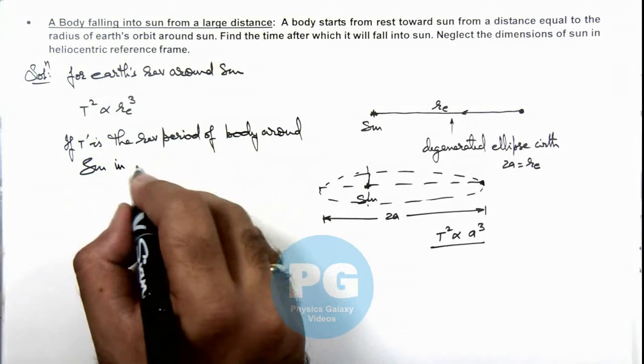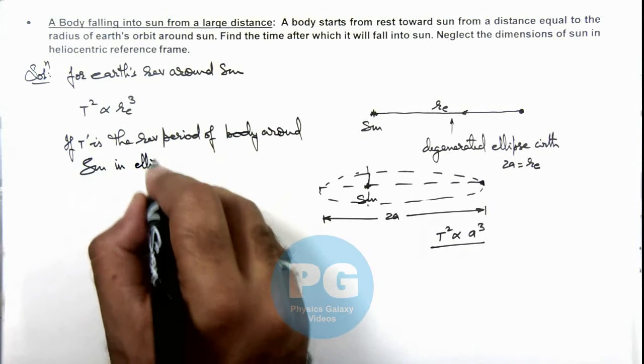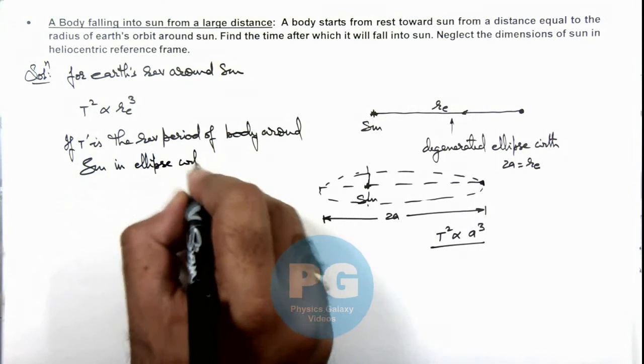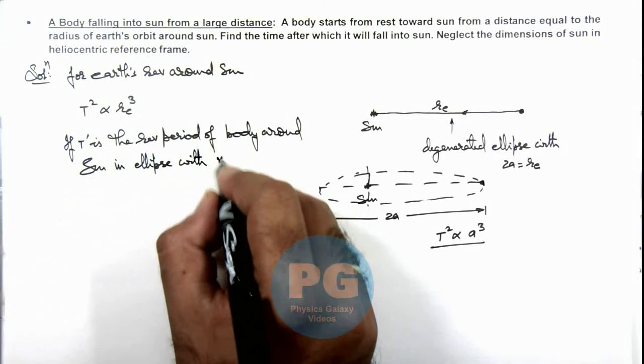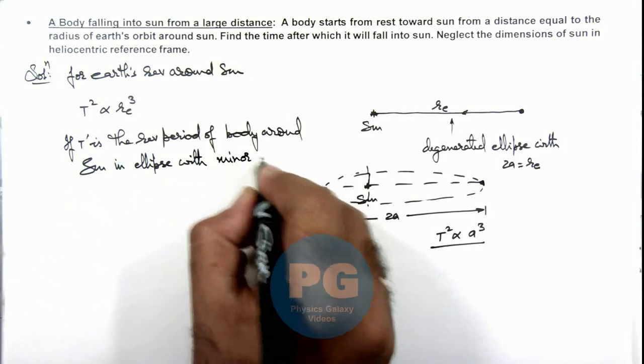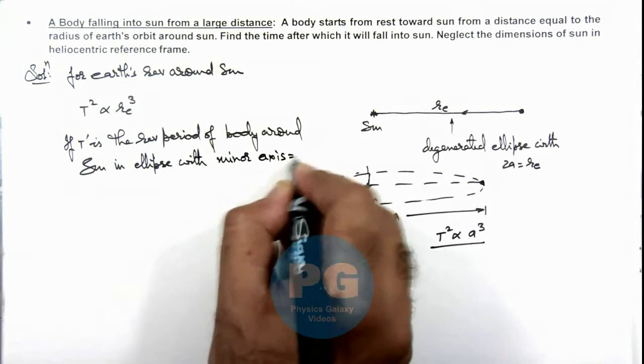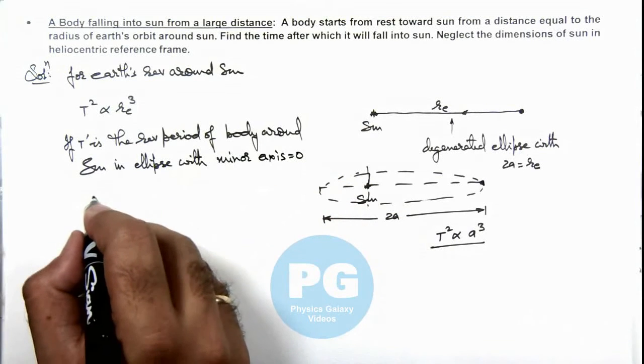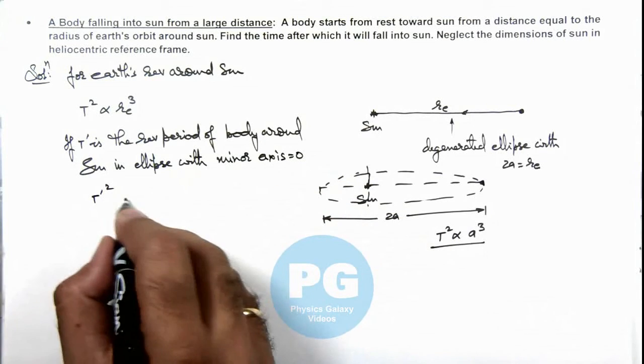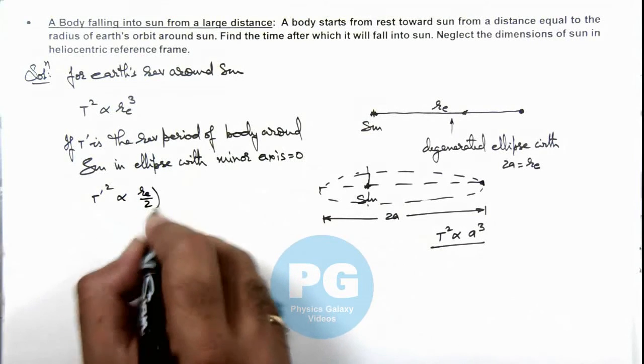In ellipse with minor axis equal to zero, this can be written as t prime square which will be proportional to re by 2 whole cube.